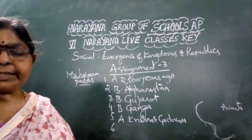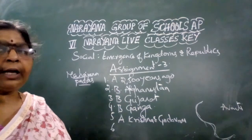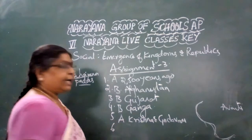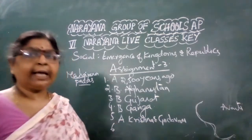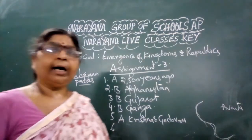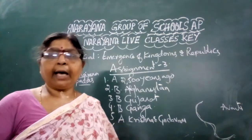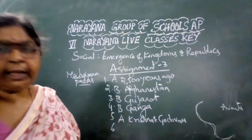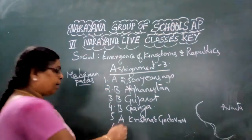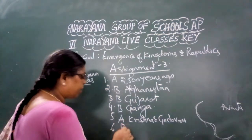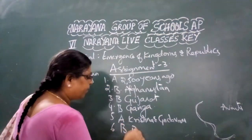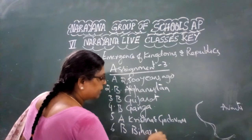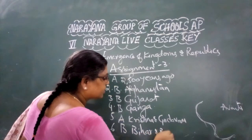Magadha extends into which present-day states? Magadha is located in between Bihar and Bengal. The correct option is Option B: Bihar and Bengal.